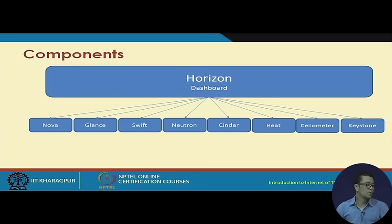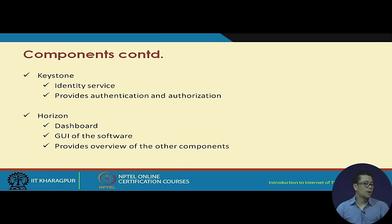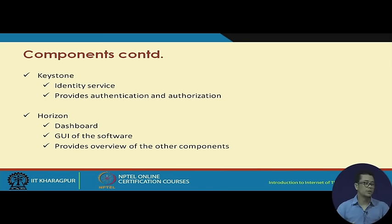These are the components of OpenStack. OpenStack has many components, each with its own specific functions. First is Horizon — this is the dashboard section from which you can access other components. Horizon is the GUI interface of the software; it provides a GUI section and also provides an overview of the other components. We will see what Horizon is when we do the practical section. Next is Keystone — Keystone is the authentication and authorization system. When a user accesses the cloud, Keystone detects if the user is authentic or authorized to use the resources they are attempting to use.